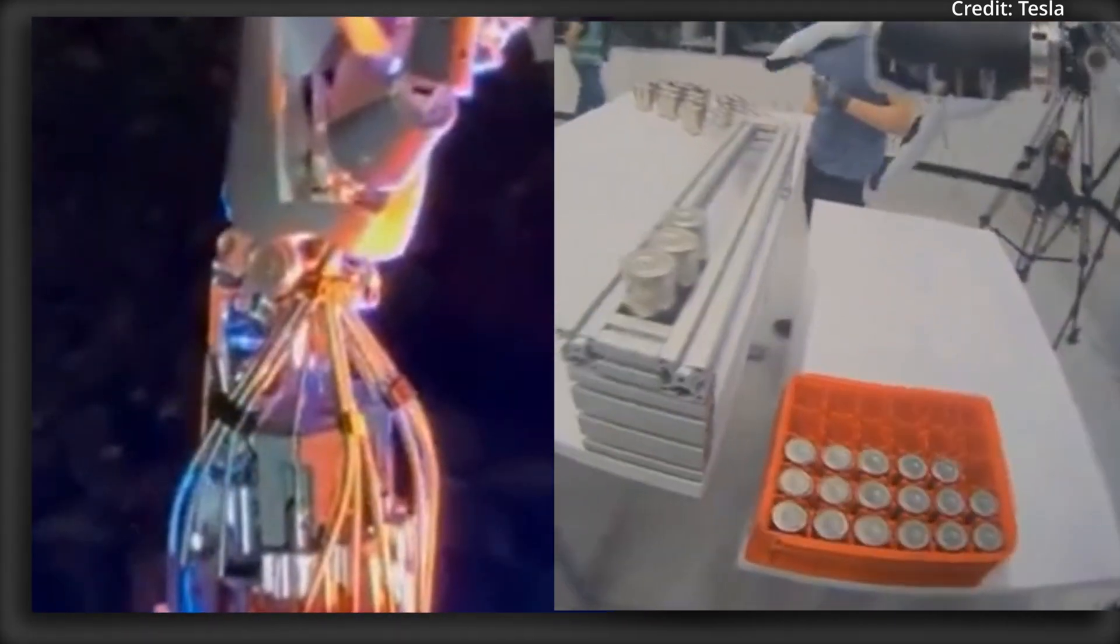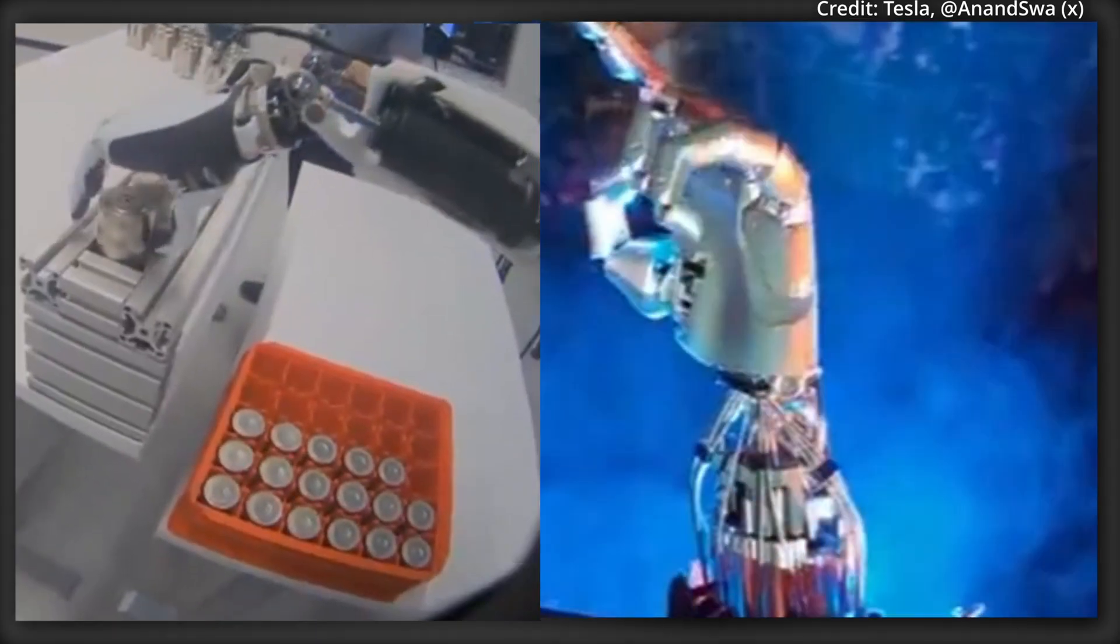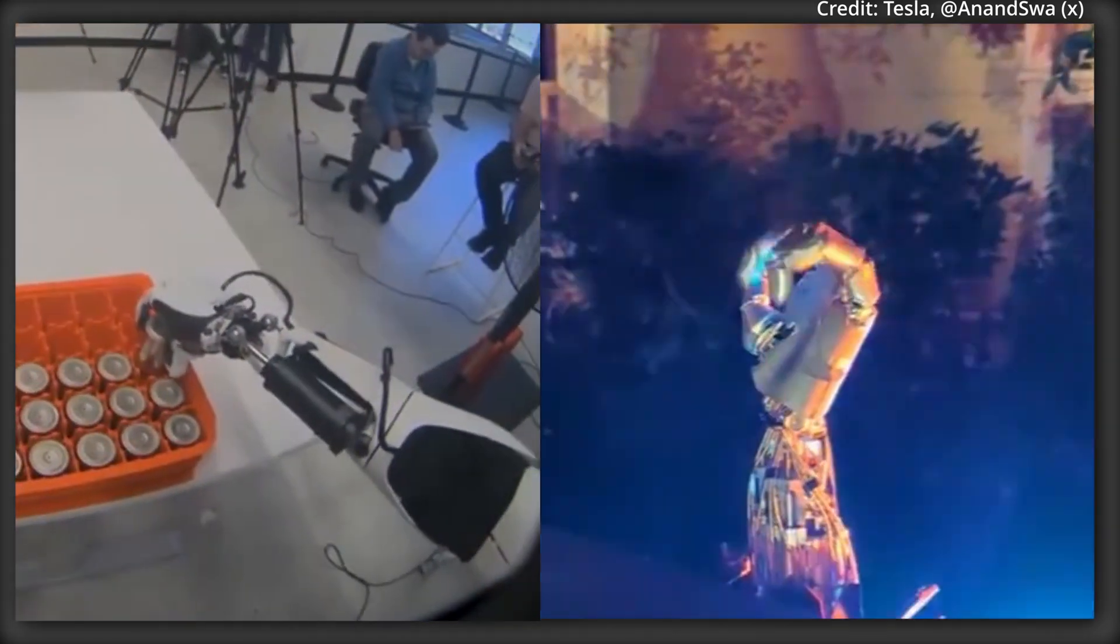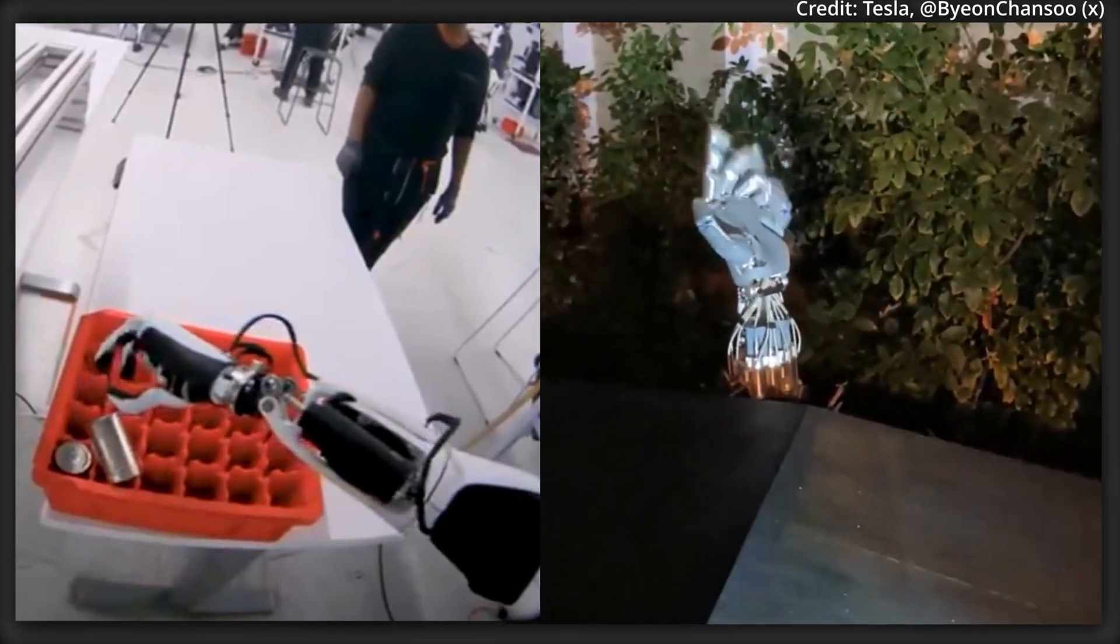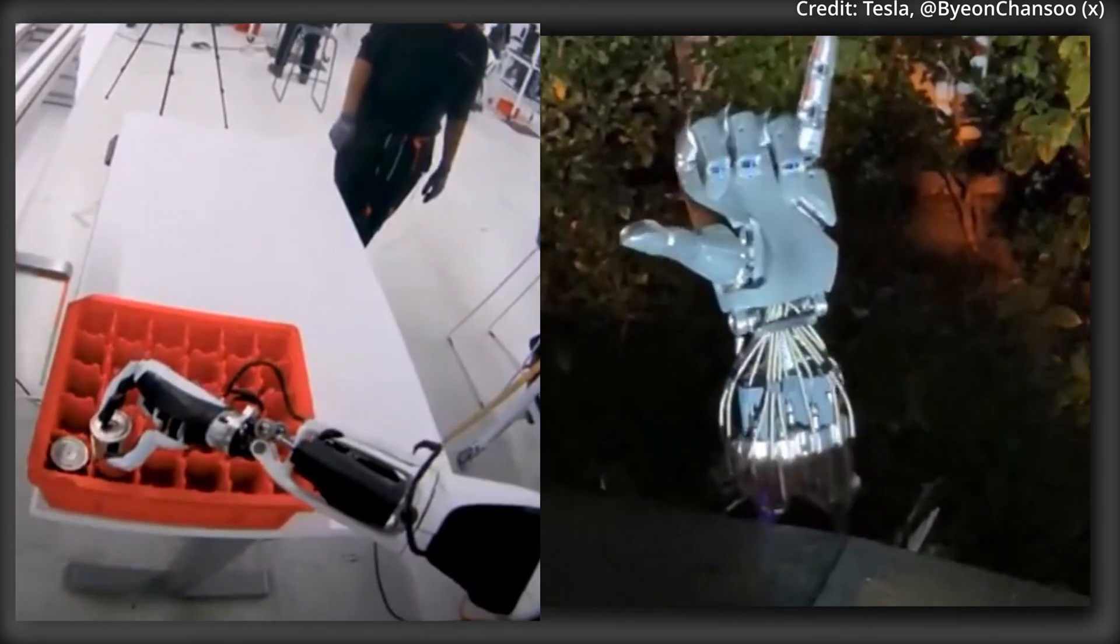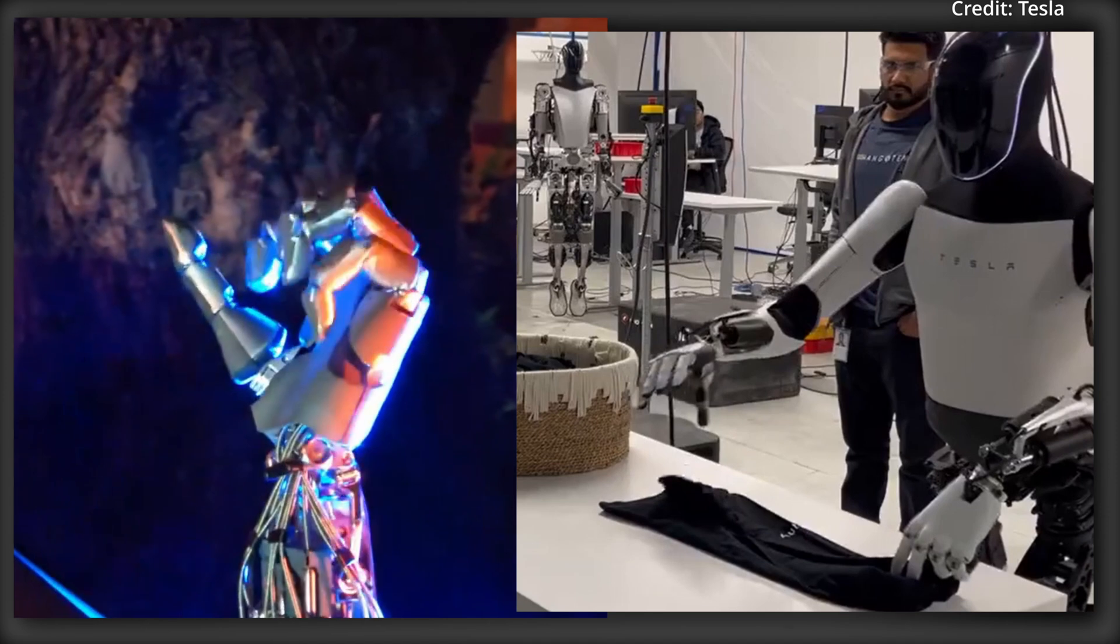Nevertheless, the hands of the Optimus Gen 3 are already proving to be fully capable of performing various manufacturing tasks inside of Tesla's factories, plus the robot is expected to play an increasingly significant role in automating production processes in 2025, according to the company.